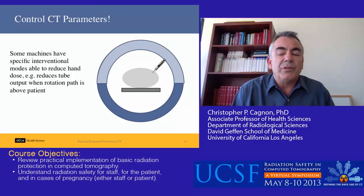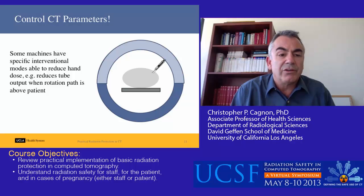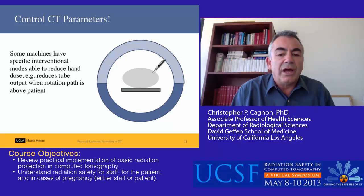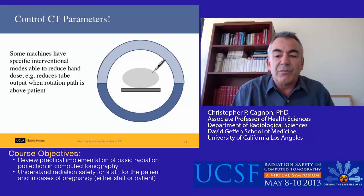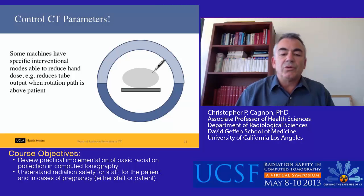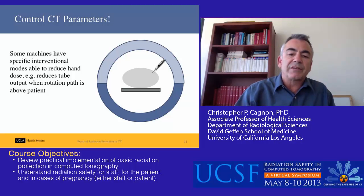You can also control your CT parameters to reduce radiation exposure to staff and yourself. Some machines have specific interventional modes able to reduce hand dose. For instance, Siemens has a mode where tube output is turned down when the rotation path is above the patient, allowing you — if you must have your hands in the beam — to dramatically reduce your dose. See if your machines have these features and try to utilize them.